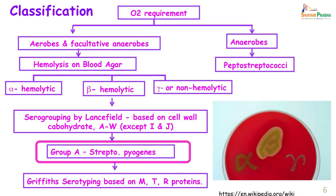Depending on oxygen requirements, streptococci are divided into aerobes and facultative anaerobes, and anaerobes. In the anaerobes we have the peptostreptococci. Among aerobes and facultative anaerobes, based on hemolysis on blood agar, these are classified into alpha-hemolytic streptococci, beta-hemolytic streptococci, which show complete hemolysis, and gamma or non-hemolytic streptococci. The beta-hemolytic streptococci are further divided on the basis of Lancefield classification — based on the carbohydrate antigen — into groups A to W except I and J, and we are going to be talking about group A Streptococcus pyogenes.